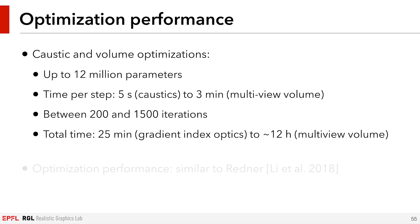In all these optimizations, we used our CUDA autodiff backend. We optimized for up to 12 million parameters at the same time. Each gradient descent step takes from a couple of seconds up to around 3 minutes. Depending on the application and its convergence properties, we run around 200 to 1500 gradient descent steps, resulting in overall optimization times from around half an hour to up to 12 hours. These timings were all measured on a single NVIDIA RTX Titan GPU. There is probably still some room to further tweak hyperparameters to reduce the optimization time.